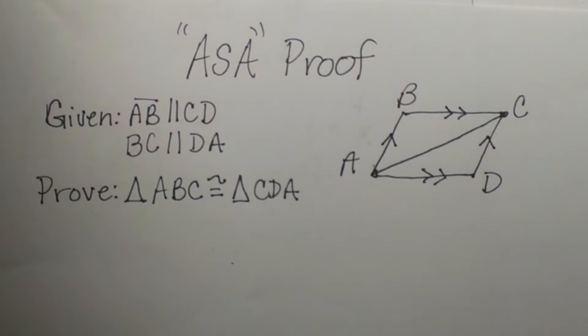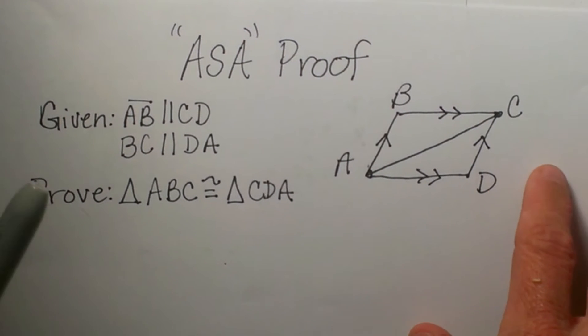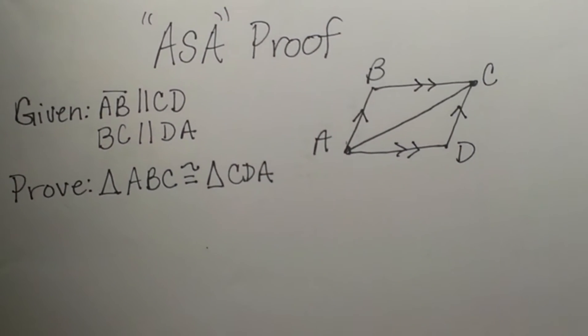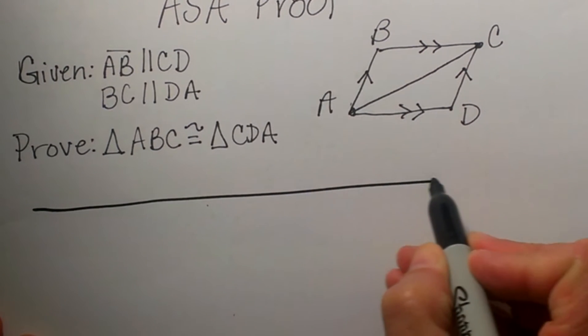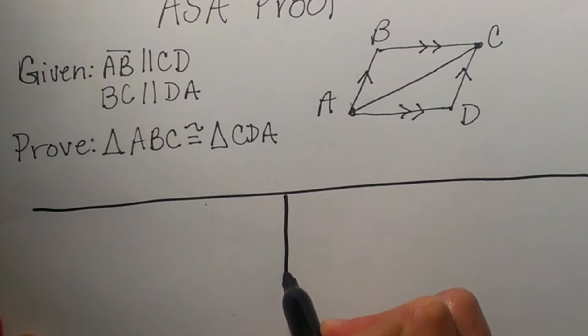And we have to somehow get to these two triangles being congruent. Well in order to prove two triangles are congruent we need three corresponding parts. So let's go ahead and draw out our information and write in what we know.